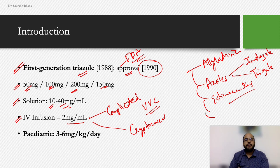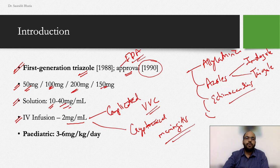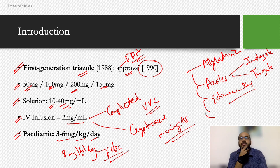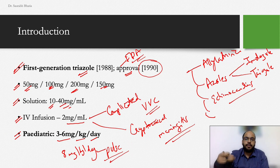I've seen patients respond to IV infusion of fluconazole when they were not responding adequately to oral. In pediatric age groups, the dose is about 3–6 mg/kg/day. You can go as high as 8 mg/kg/day, but only when using fluconazole in pulse form — which, by definition from the steroid lecture, is a drug used in supra-pharmacological doses for a short period of time.